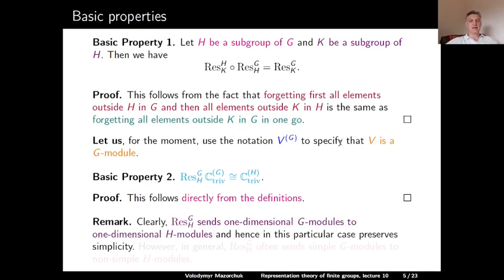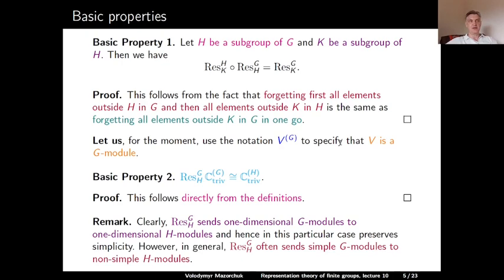Remark: restriction sends one-dimensional G-modules to one-dimensional H-modules, and for this particular case it sends simple G-modules to simple H-modules. However, in general this claim is not true. Quite often, restrictions from G to H send simple G-modules to non-simple H-modules.